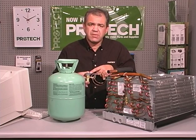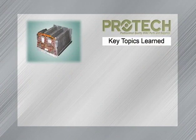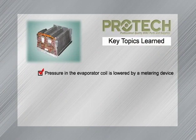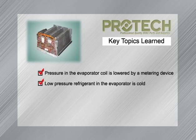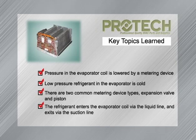If the expansion valve fails, it must be replaced. Let's review the key topics: we learned that pressure in the evaporator coil is lowered by the metering device; we learned that low-pressure refrigerant in the evaporator is very cold, which is why we drop the pressure — because hot goes to cold; we learned there are two types of metering devices, expansion valve types and piston types; refrigerant enters via the liquid line and exits the evaporator coil via the suction line.